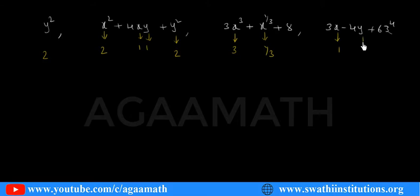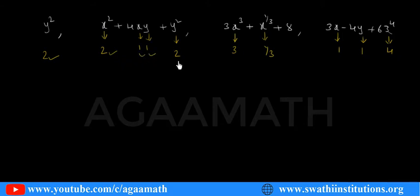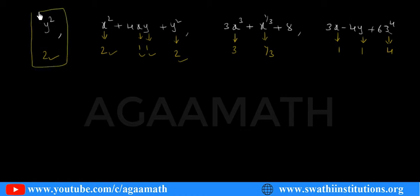When I list all the powers of the variables — 2, 1, 1, 2, 3 — these are all positive integers. Since positive integers are non-negative integers, I can say that y squared is a polynomial.